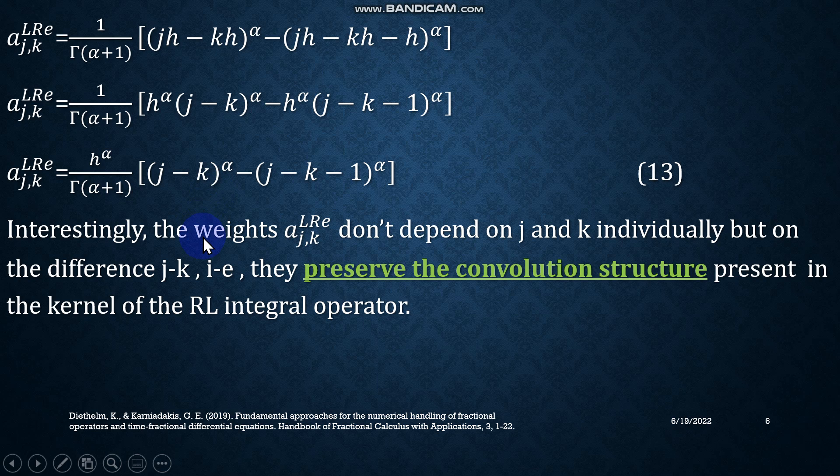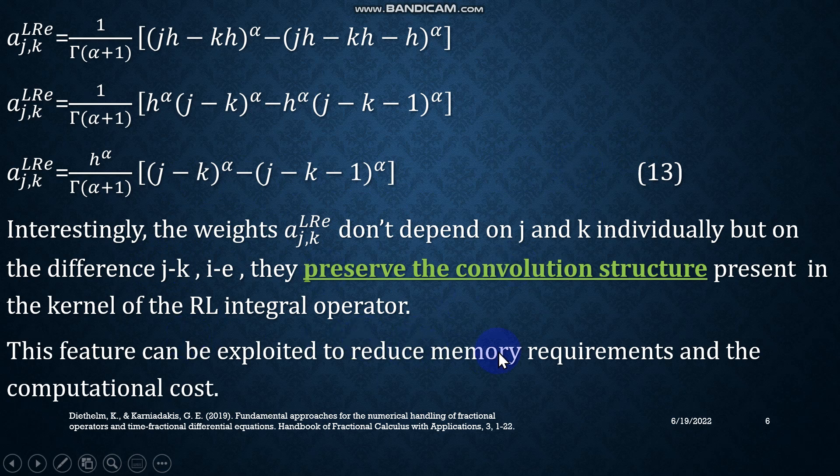Note that equation number 13 is very important. Here the weights do not depend on j and k individually, but they depend on the difference j-k. What does it mean? It means that they preserve the convolution structure that you had noticed in equation number 1, in the kernel of the Riemann-Liouville integral operator. Remember, it has a kernel (x-s)^(α-1), so there was a difference in the kernel, and we have a similar sort of structure in the weights. This feature can be exploited to reduce the memory requirements and computational cost.